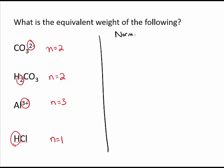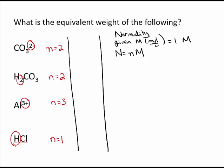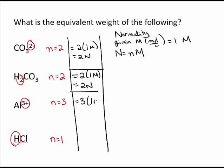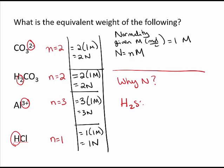If you are asked to find the normality of a solution given a molar concentration of 1 M, you use the relationship: normality equals the equivalent number times molarity. For the carbonate ion: 2 × 1 M = 2 N. For carbonic acid: 2 × 1 M = 2 N. For aluminum: 3 × 1 M = 3 N. For hydrochloric acid: 1 × 1 M = 1 N.